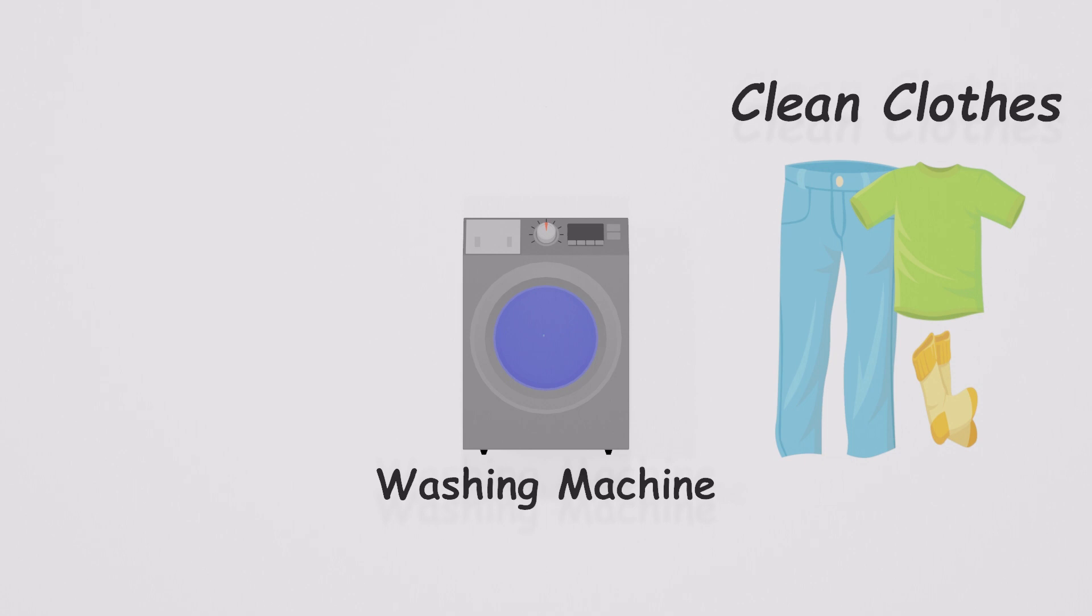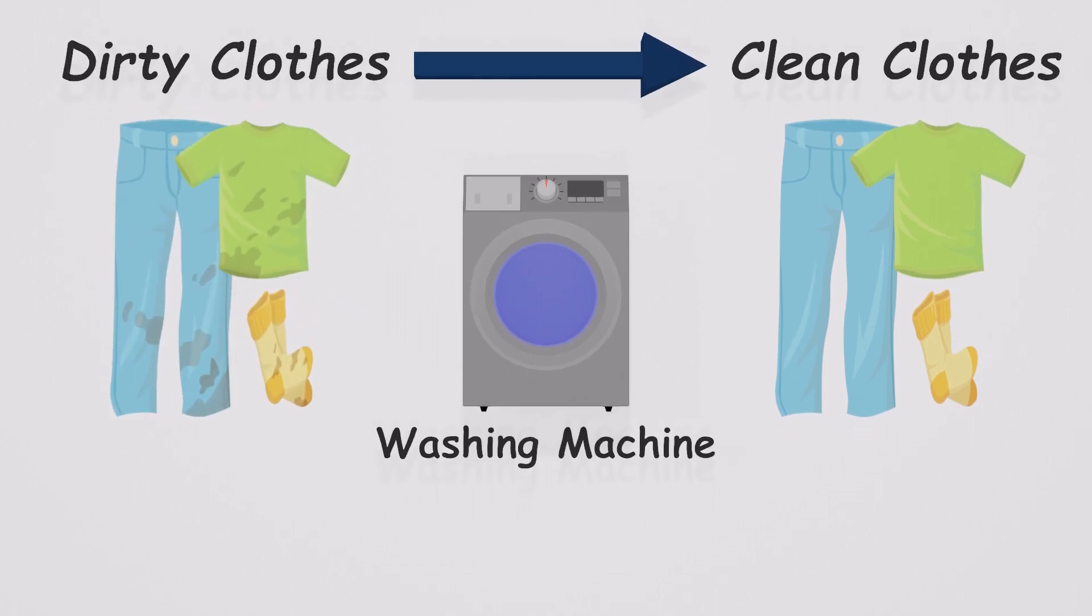This transformation from dirty to clean represents the functionality of a washing machine. Here, the dirty clothes are the input of the washing machine. The output is clean clothes.